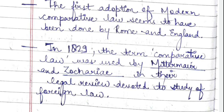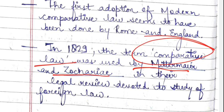In 1829, the term comparative law was used by Mittermeyer and Zuckari in their legal review devoted to the study of foreign law. This was a significant early use of the term comparative law.